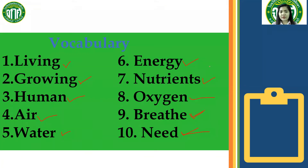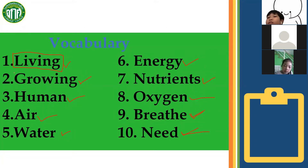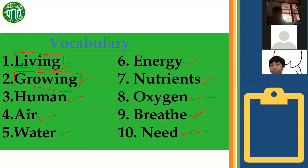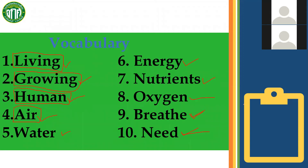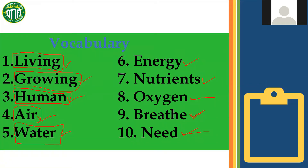Those are the vocabulary words for our topic today. I will ask someone to spell them. Shabu, please unmute yourself and spell the word 'growing.' Very good. Next, Gone, please unmute yourself and spell number three: 'human.' H-U-M-A-N. Very good. Pam, please unmute yourself and spell the word 'air.' A-I-R. Very good. Next, spell 'water.' W-A-T-E-R. Very good.